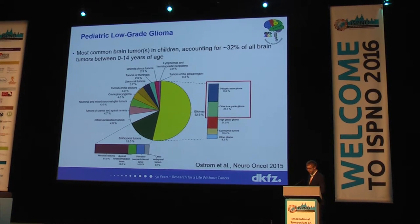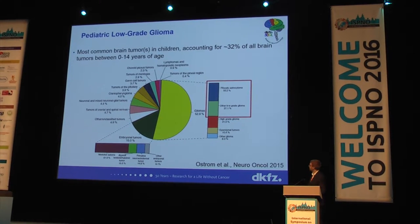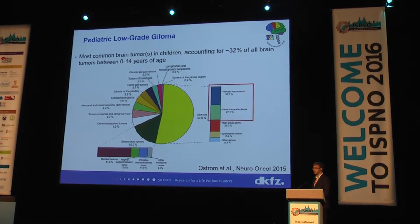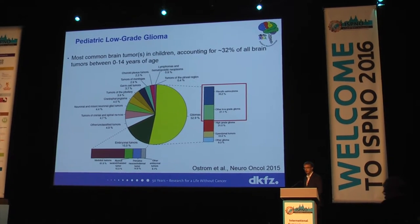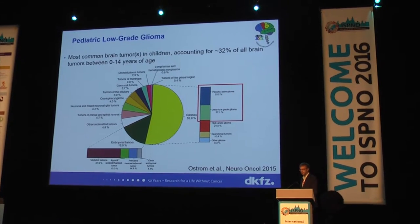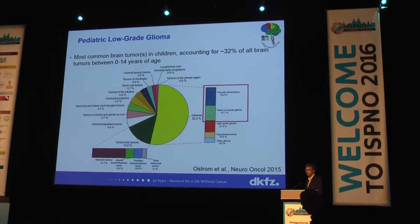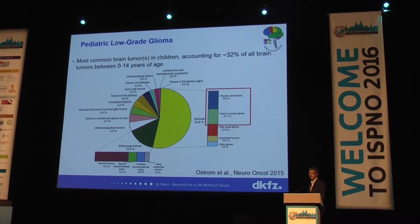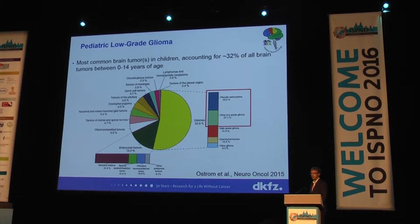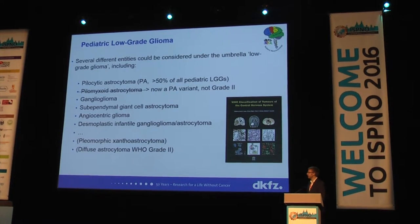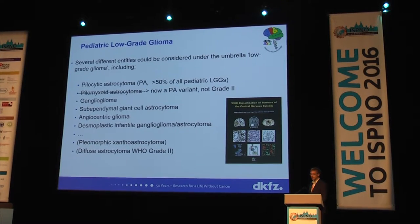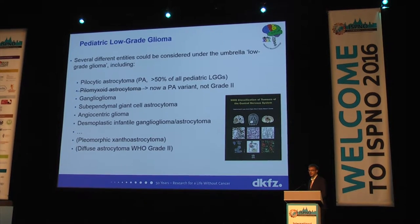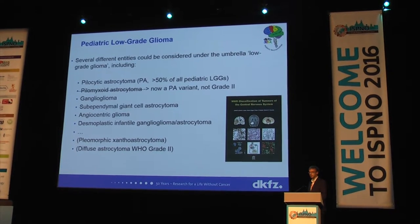I really don't need to spend long on the introduction for this audience, but just to say that low-grade gliomas are really the most common brain tumor in children, and that this group taken together is about a third of all brain tumors under the age of 15. And it's an umbrella term — there are a lot of different histological entities that fall into this category.